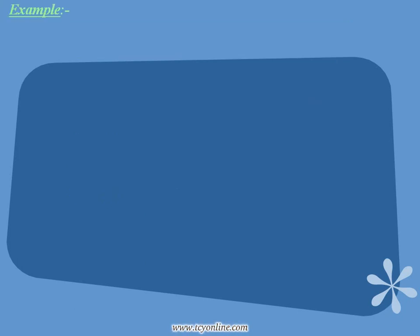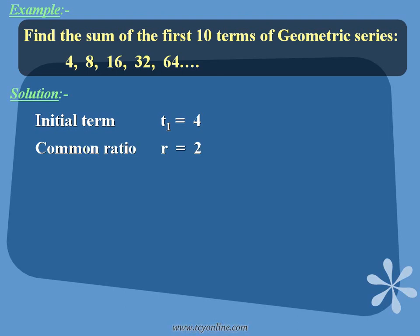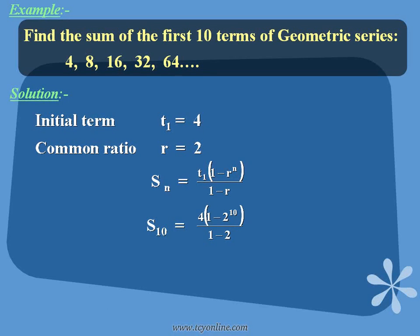Now see an example. The series is 4, 8, 16, 32 and so on, and you need to find the sum of the first 10 terms. The first term T1 equals 4, and as each term is 2 times the previous term, the common ratio r equals 2. Using the formula S_n equals T1 times 1 minus r raised to power n, whole divided by 1 minus r, and plugging in the values, you get S10 equals 4 times 1,023, which equals 4,092. So the sum of the first 10 terms is 4,092.